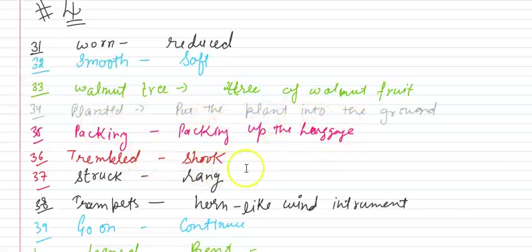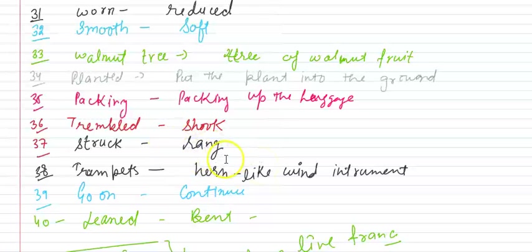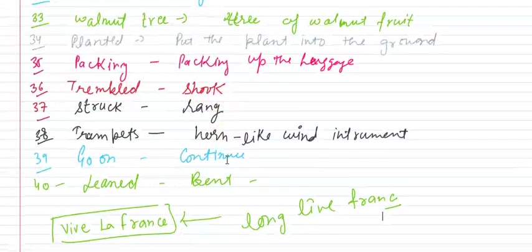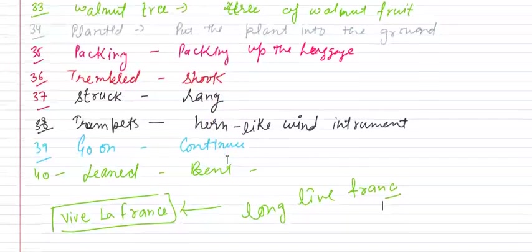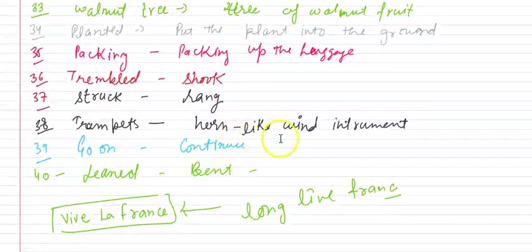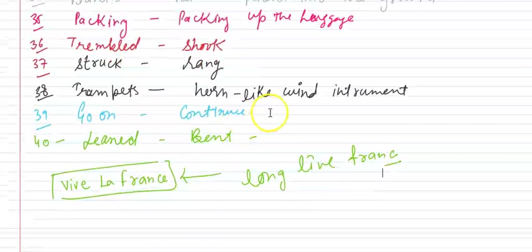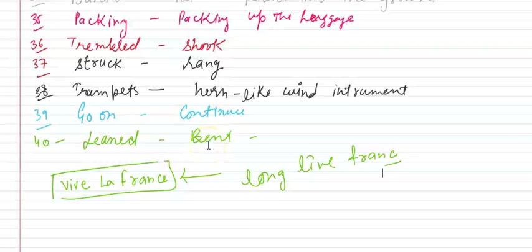Trampled means shook, kaampna. Struck means ring, kuch ring karna, bajana. Trumpet means horn bajana, ek hai yeh like wind instrument. Go on means continue. And leaned means bent, jhukna.